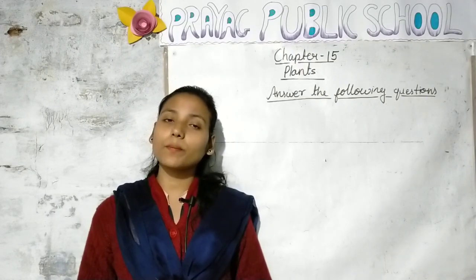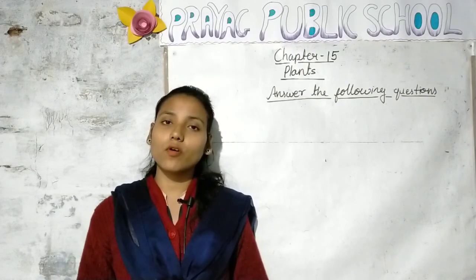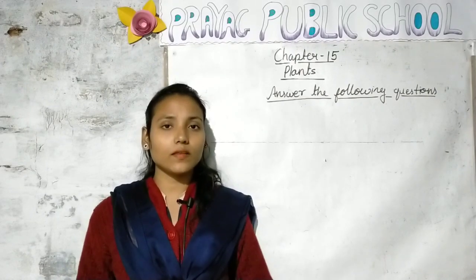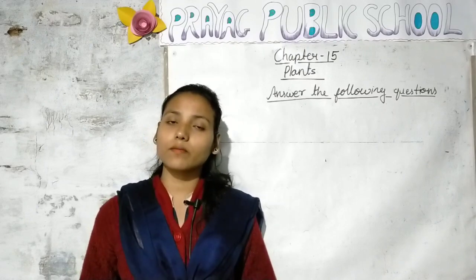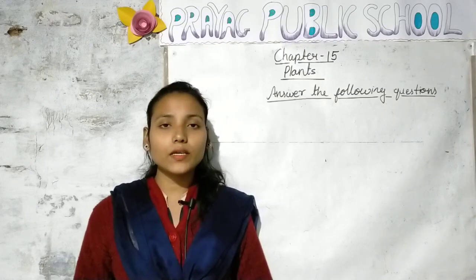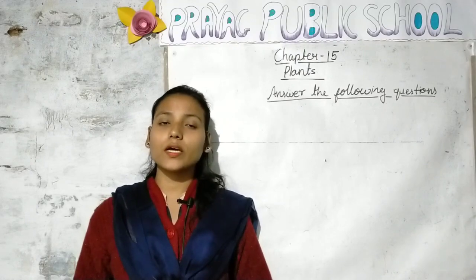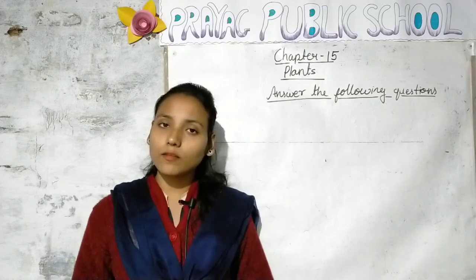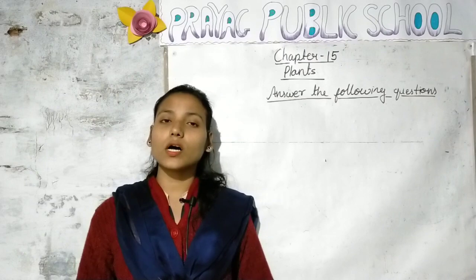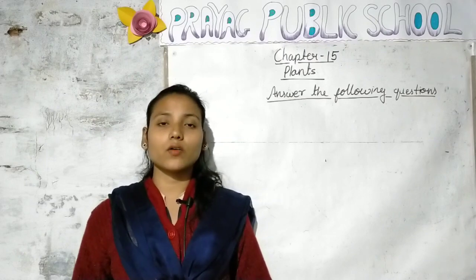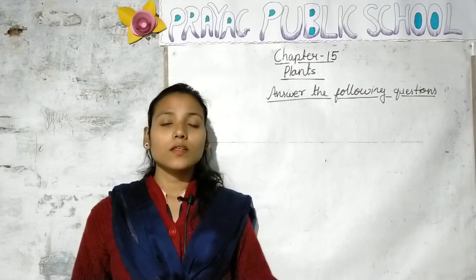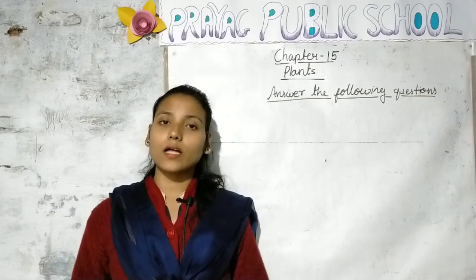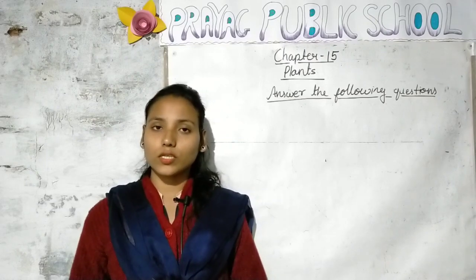Next, creepers also have weak stems. Creepers have weak stems and these plants grow along the ground. These plants also have weak stems and spread along the surface rather than climbing upward.